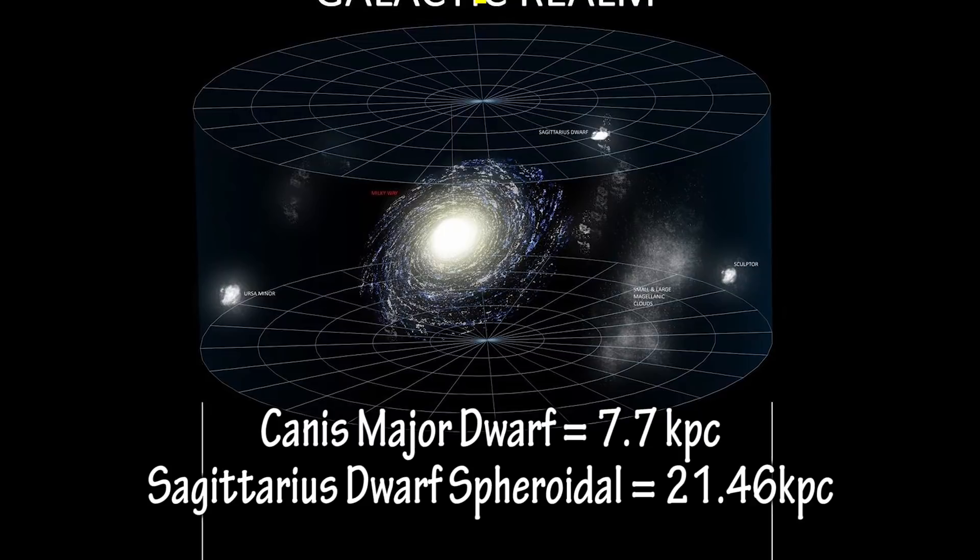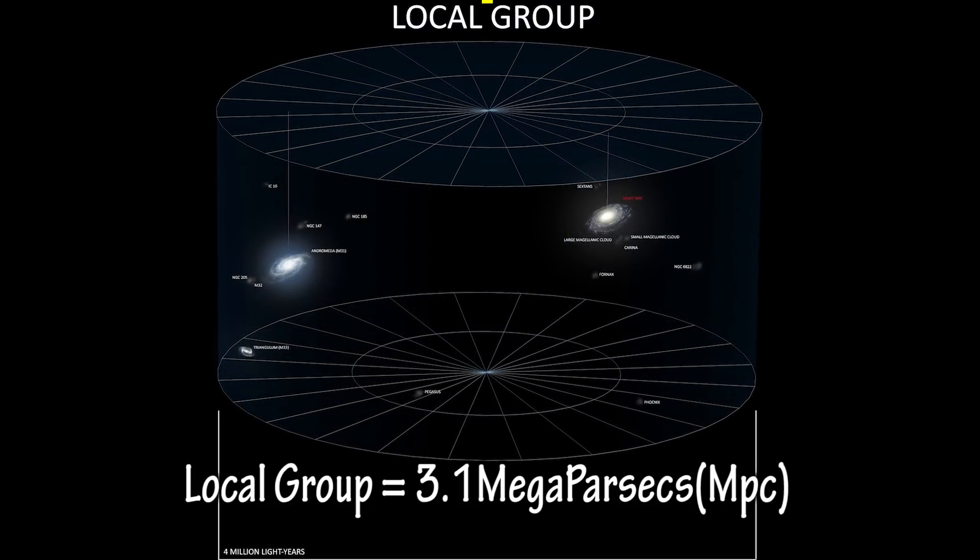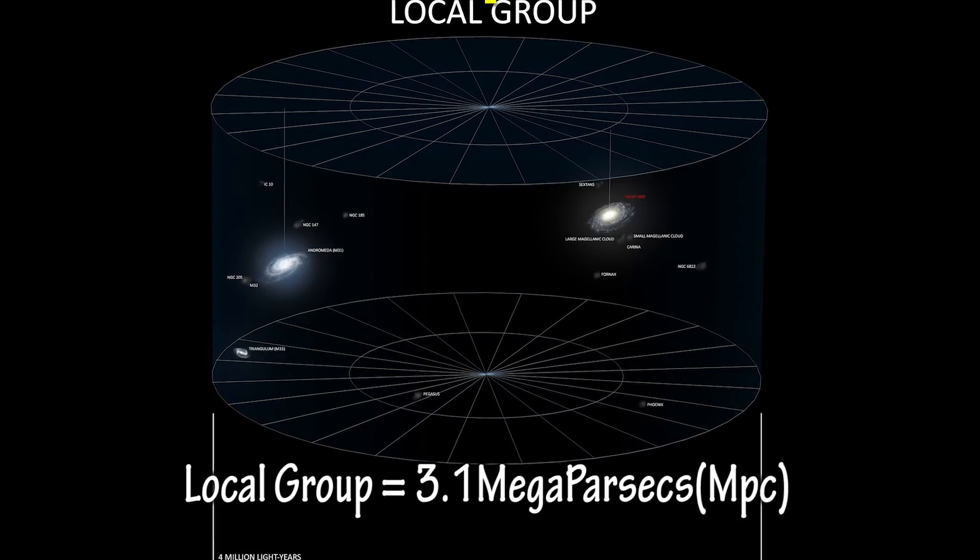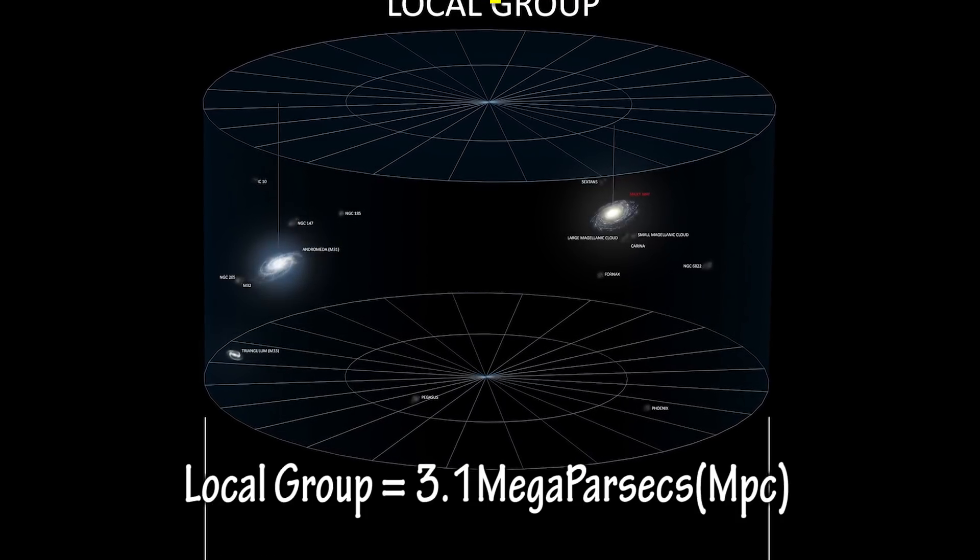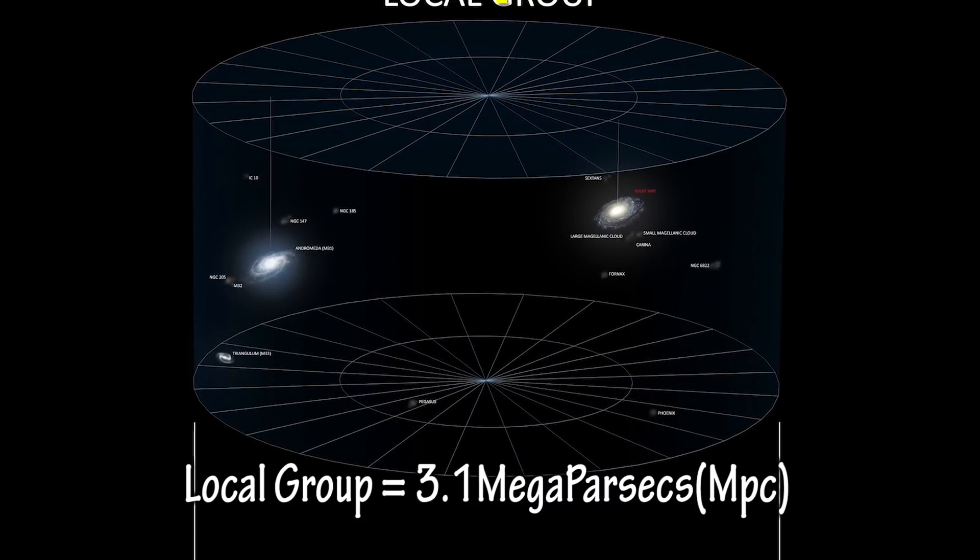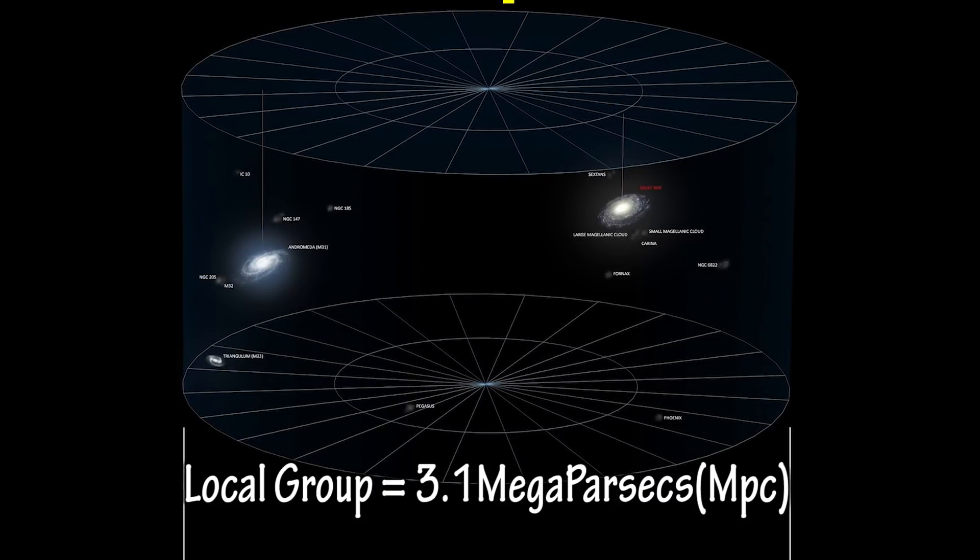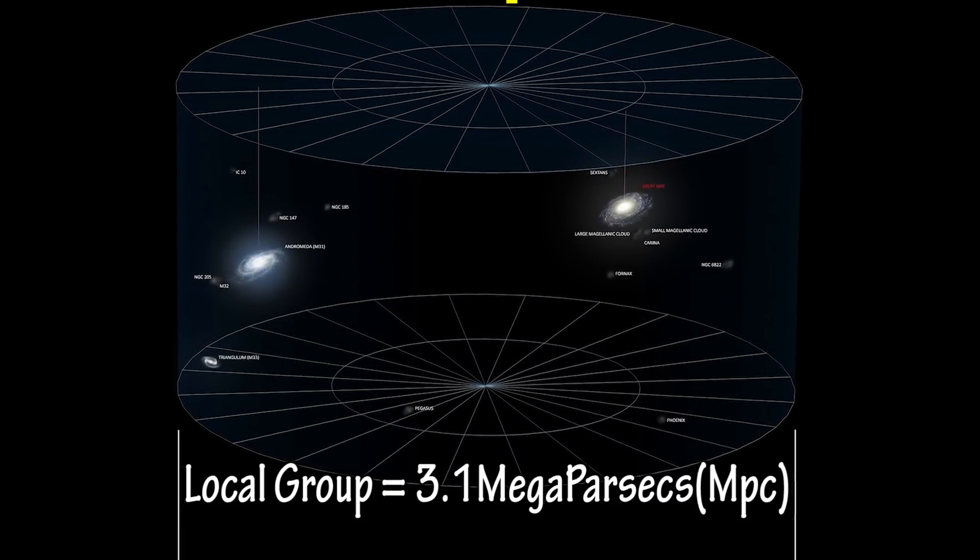The Milky Way and Andromeda galaxies are part of an approximate 54 galaxy cluster called the Local Group. These galaxies are gravitationally bound to each other, with the gravitational center being somewhere between the Milky Way and Andromeda galaxies.